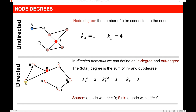We would need a directed network to represent Twitter followers, for example, because maybe person A is following person B but person B is not following person A. In a directed network, we define an in-degree and an out-degree. In-degree is how many connections are coming into that node, and out-degree is how many connections are coming out of that node. To get the total degree, you add both together. So if we look at node C, we have two coming in and one going out — an in-degree of two, an out-degree of one, and a total degree of three. If nothing points to a node, we have a source node with in-degree of zero. If nothing comes out of a node, we have a sink with out-degree of zero.